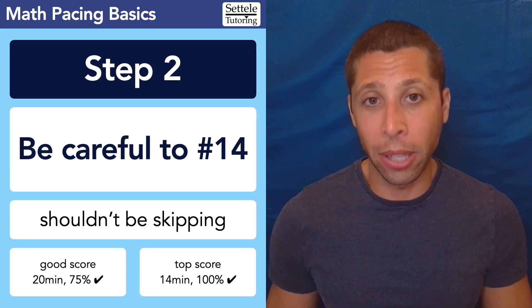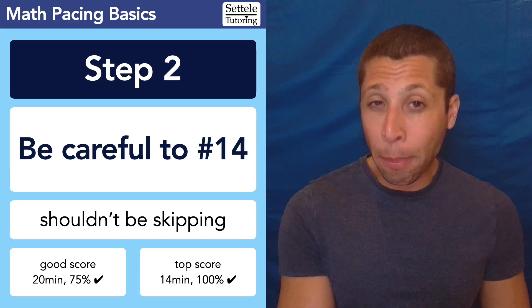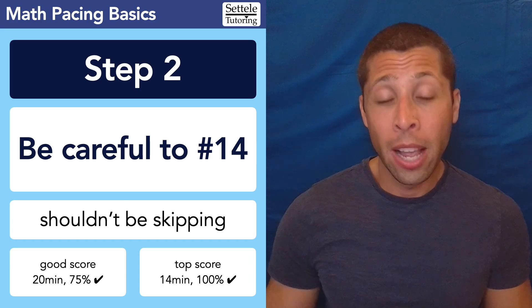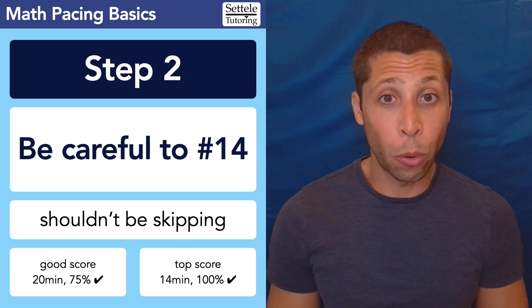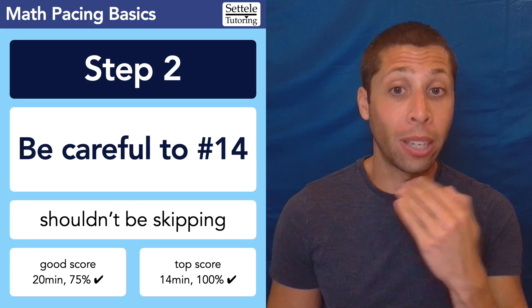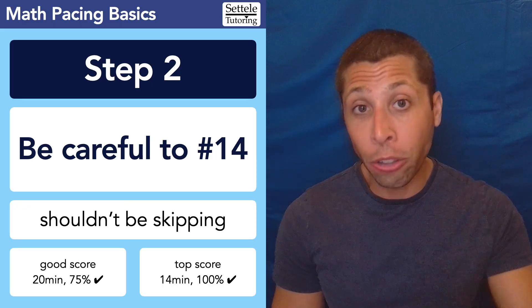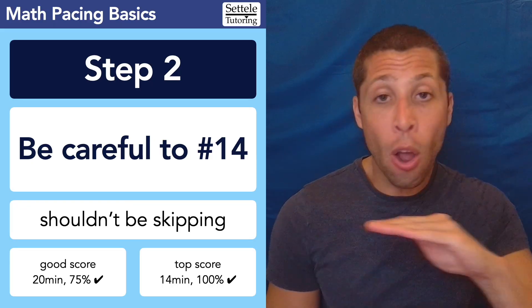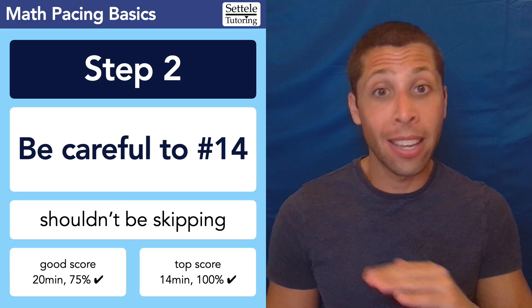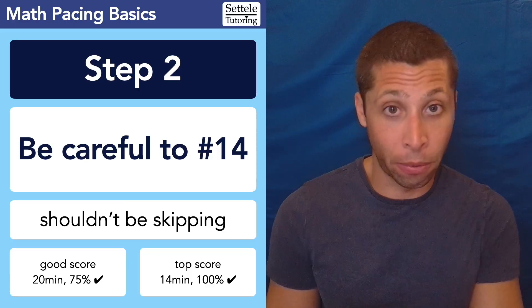If you want a top score though, 700 or better, you basically want to be getting through these first 14 questions in 14 minutes or less and you need to be 100% accurate. No exceptions, no careless mistakes, nothing. These need to be perfect.